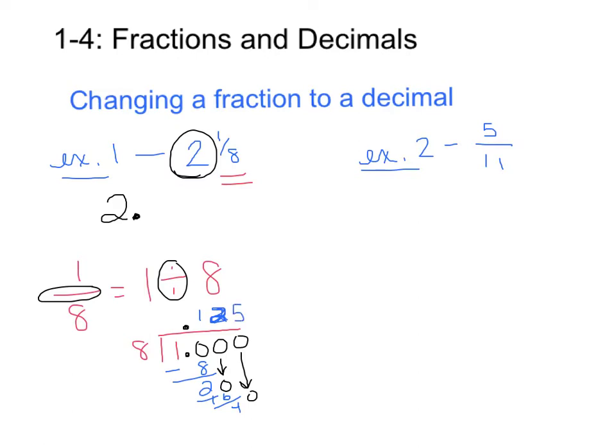So this will provide then what my decimal is. It becomes 2 and 1 8th is going to equal 2.125, 2 and 125 thousandths as a decimal.